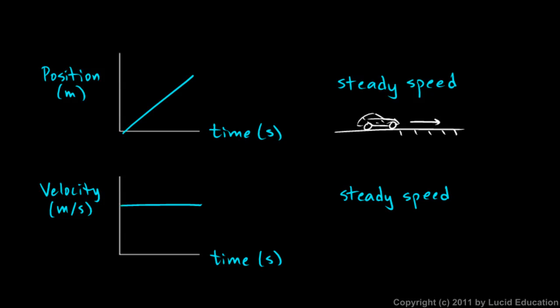So, both of these graphs represent the same motion. These two graphs both represent motion at a steady speed, or motion where there is no acceleration, or you could say motion at a constant velocity. The two graphs look different because one of them is a graph of the car's position over time, and one is a graph of the car's velocity over time. But both of those graphs should make sense to you.